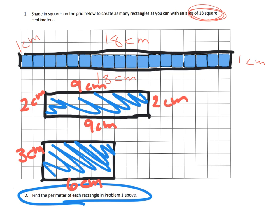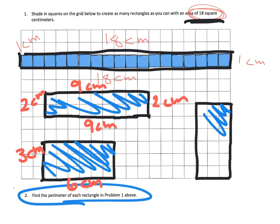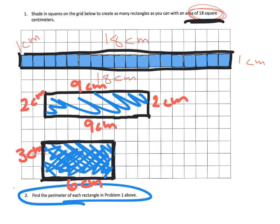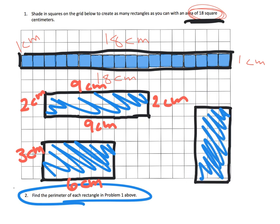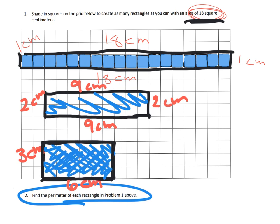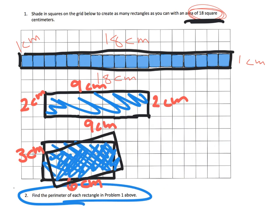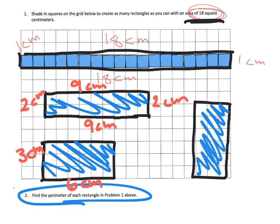Some students might ask: what about 6 units tall? Six units tall and 3 units wide — is that allowed? Absolutely, it could be, but we've already found it. It's right here — it's the same as the 3-by-6 rectangle, just rotated. So we don't need to list it again. We have found the three rectangles that are possible.